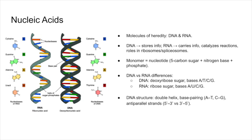Nucleic acids are the molecules of heredity. DNA stores genetic information in cells, while RNA plays multiple roles — sometimes as hereditary material in viruses, but more often as an information carrier, or even as a catalyst in ribosomes and spliceosomes. The monomers of nucleic acids are nucleotides, each made of a 5-carbon sugar, a nitrogenous base, and a phosphate group. DNA and RNA differ slightly.